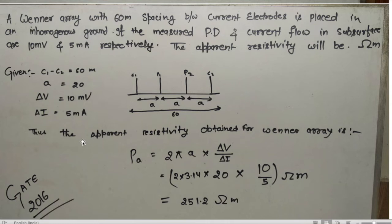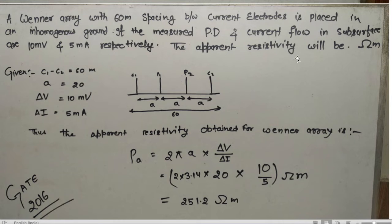The measured potential difference and the current flow in the subsurface are 10 millivolt and 5 milliampere respectively. The apparent resistivity is to be found in ohm-meter.